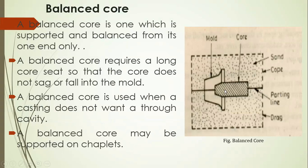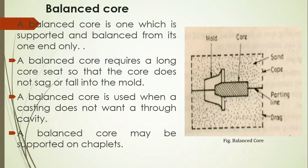When molten metal is poured inside the mold cavity it will exert pressure on the surface of the core, and the core must withstand that pressure — it must not change its place. This balanced core is used when the casting does not need a through cavity; the hole is at only one end, which is called a blind hole. A through hole goes throughout the length of the casting, whereas a blind hole is made at one side only. A balanced core may be supported by chaplets inside the mold cavity.